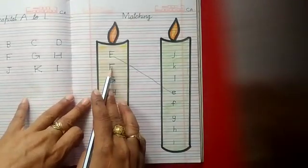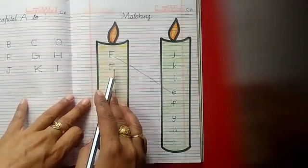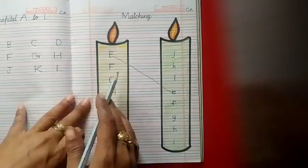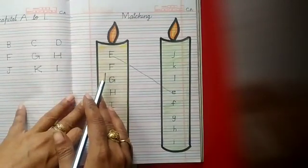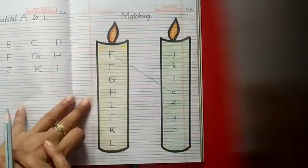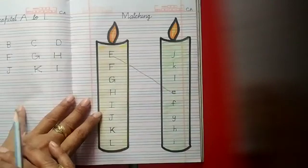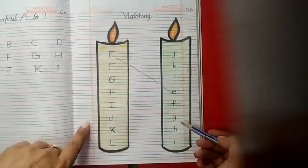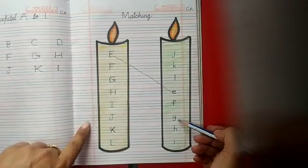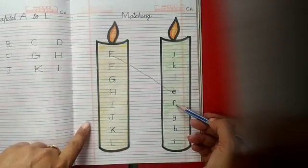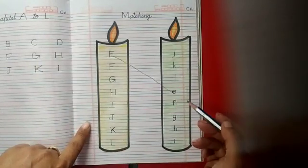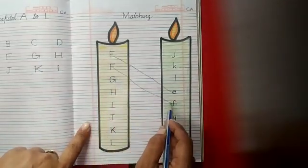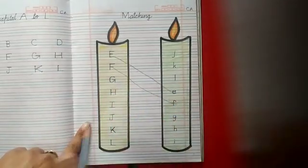Now, read the next letter. F. This is mama F. And kids, where is the baby F? Here? No. Here? No. Here? Yes. So we match mama F to baby f. Good.